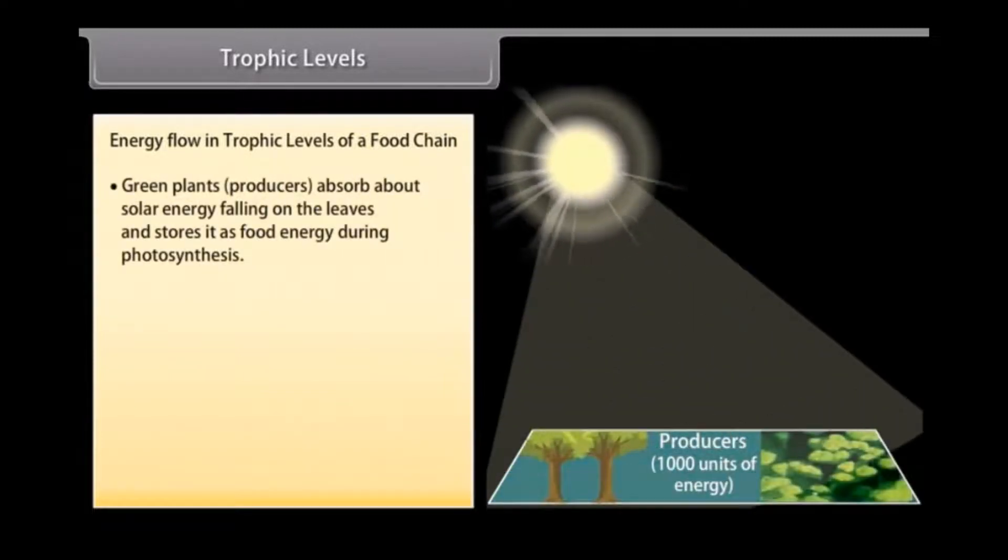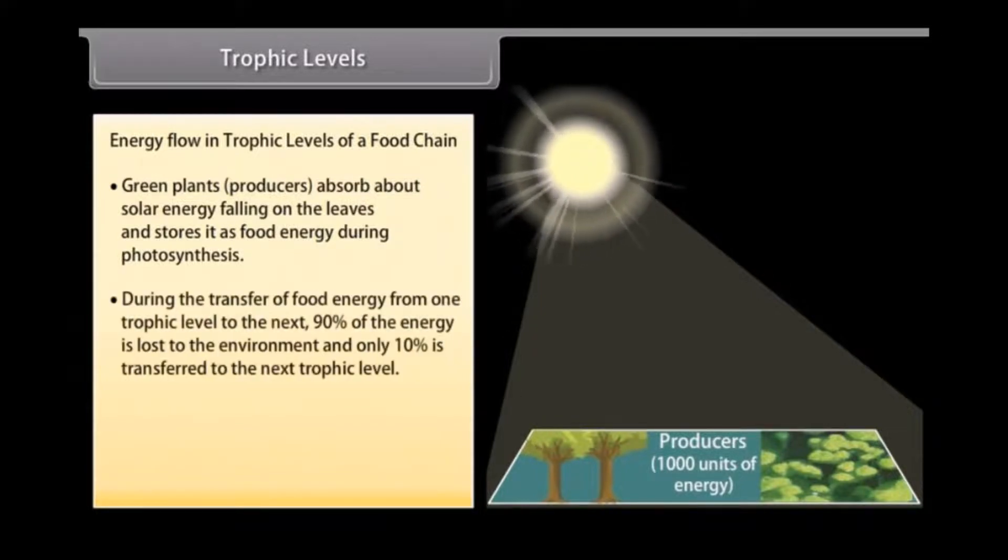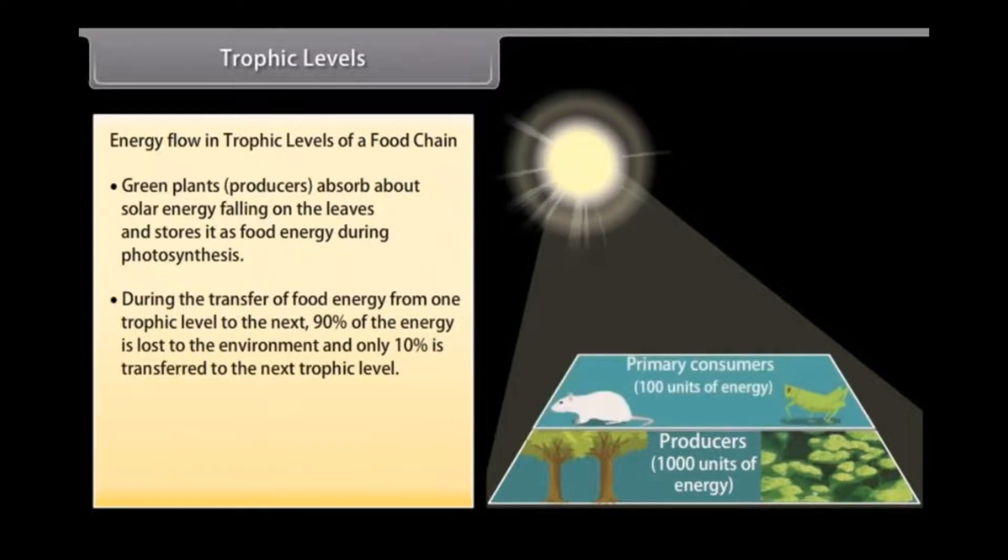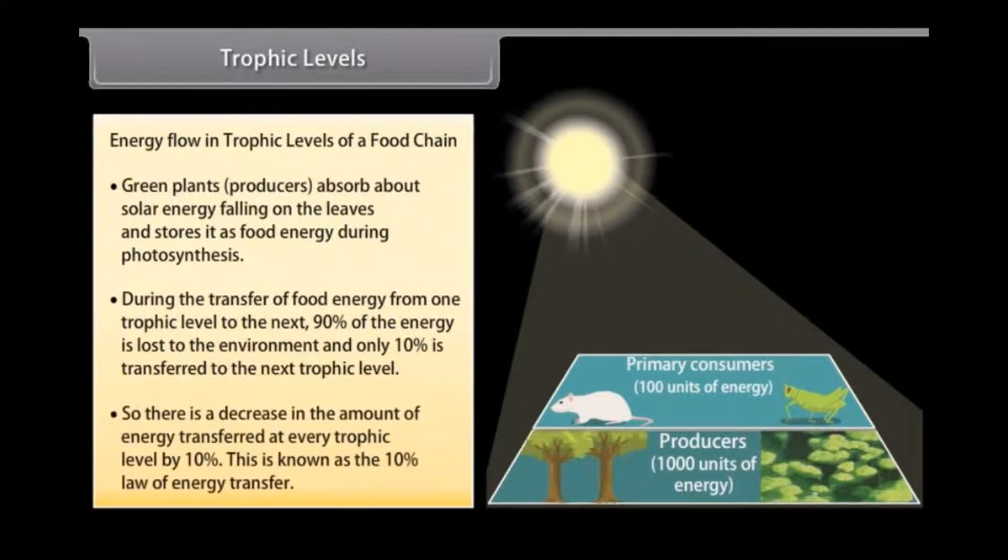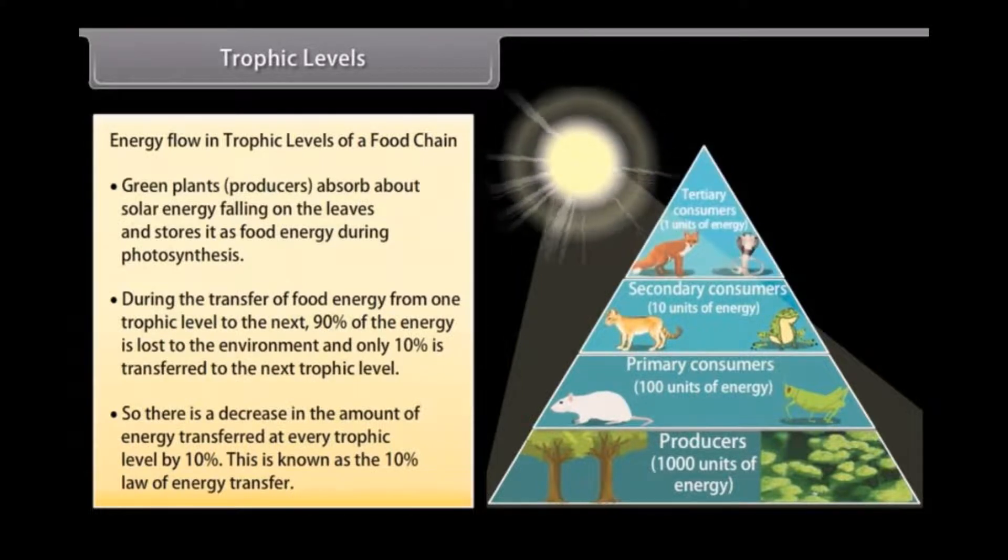Trophic Levels. Energy flow in trophic levels of a food chain. Green plants, producers, absorb about 1% of solar energy falling on the leaves in stores. During the transfer of food energy from one trophic level to the next, 90% of the energy is lost to the environment and only 10% is transferred to the next trophic level. So there is a decrease in the amount of food energy transferred at every trophic level by 10%. This is known as the 10% law of energy transfer.